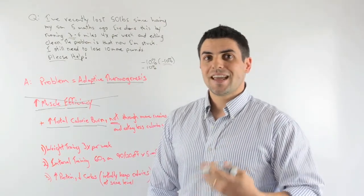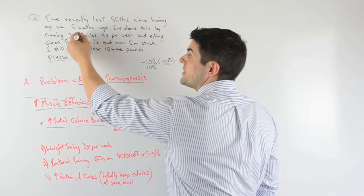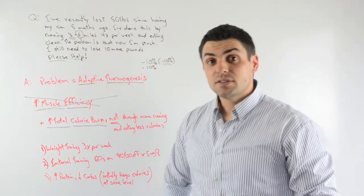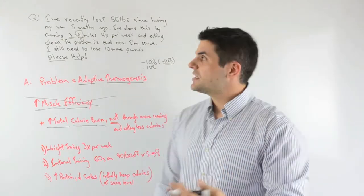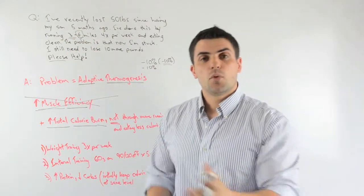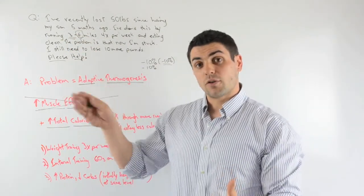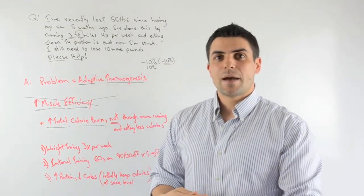Oftentimes with weight loss plateaus, the answer is not to say do more. So up this to say eight miles. That's not the answer because you'll just further adapt to that. Because usually the answer that people have would say move that to eight and let's cut calories even more, so we can create that greater deficit. But that's not the answer in this solution because you're just going to adapt more.